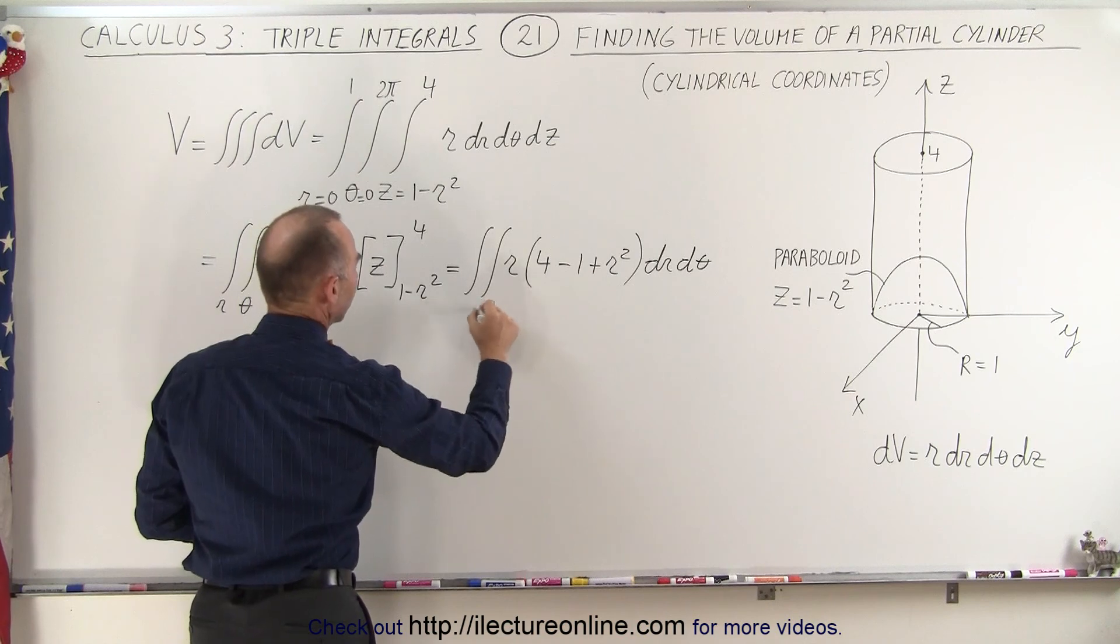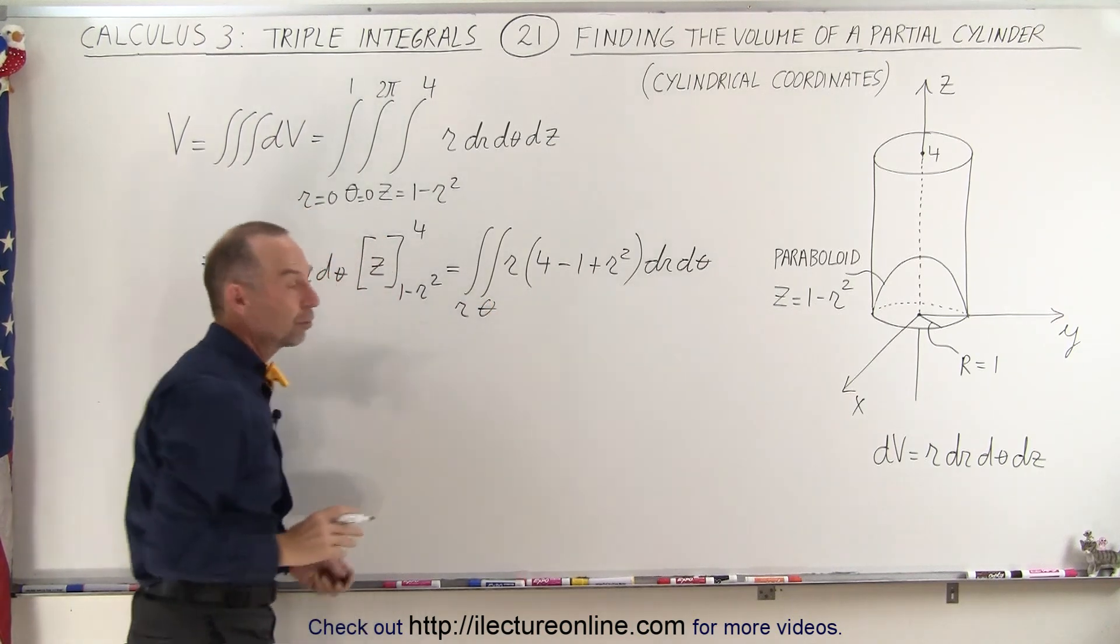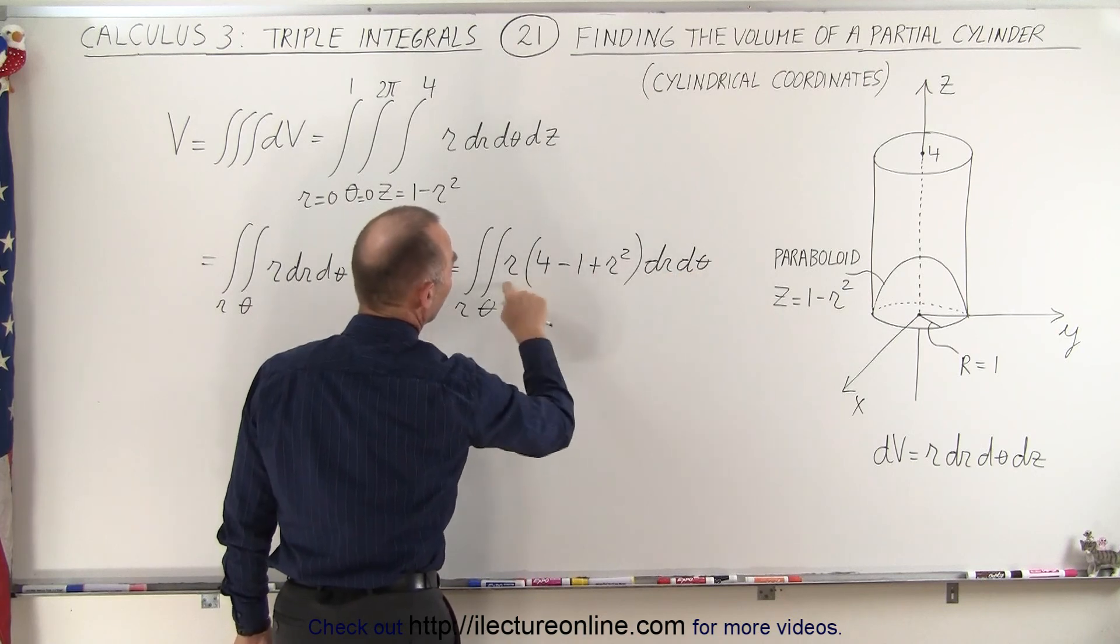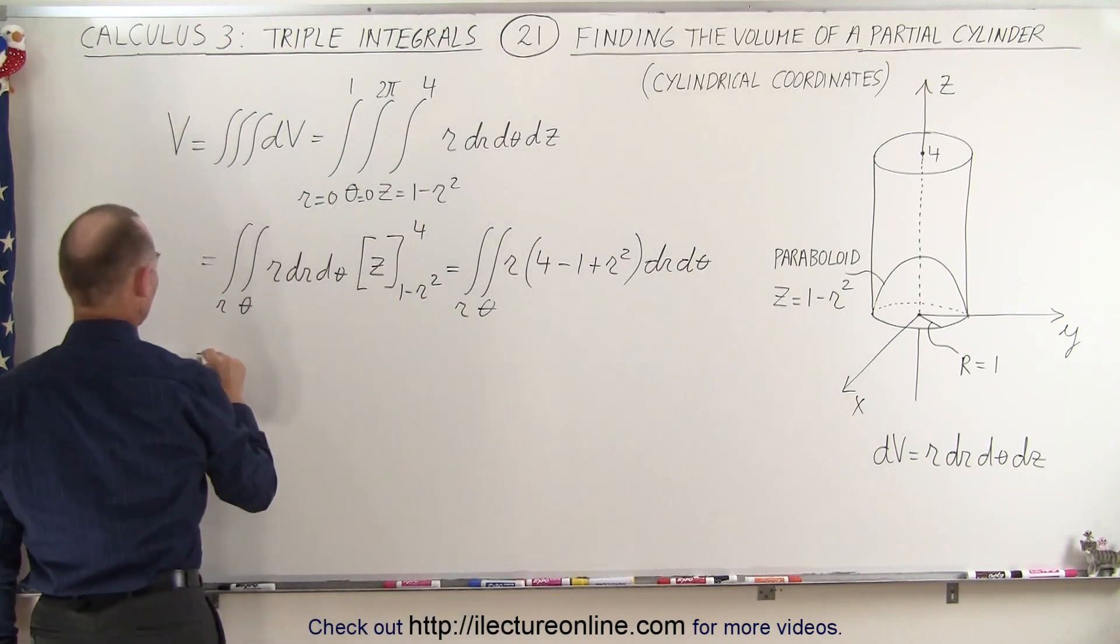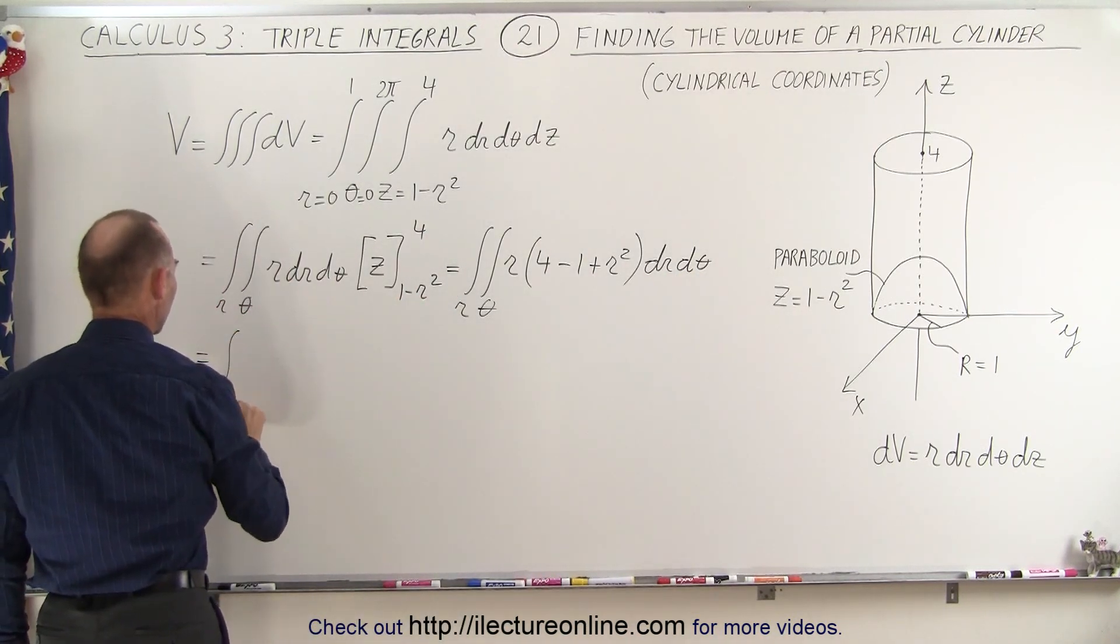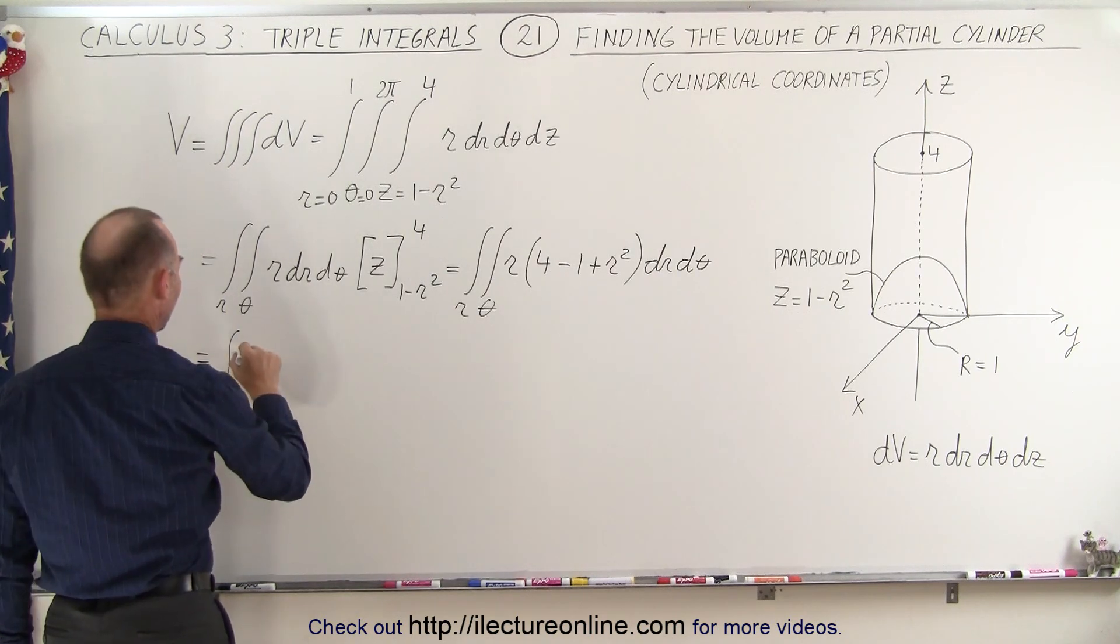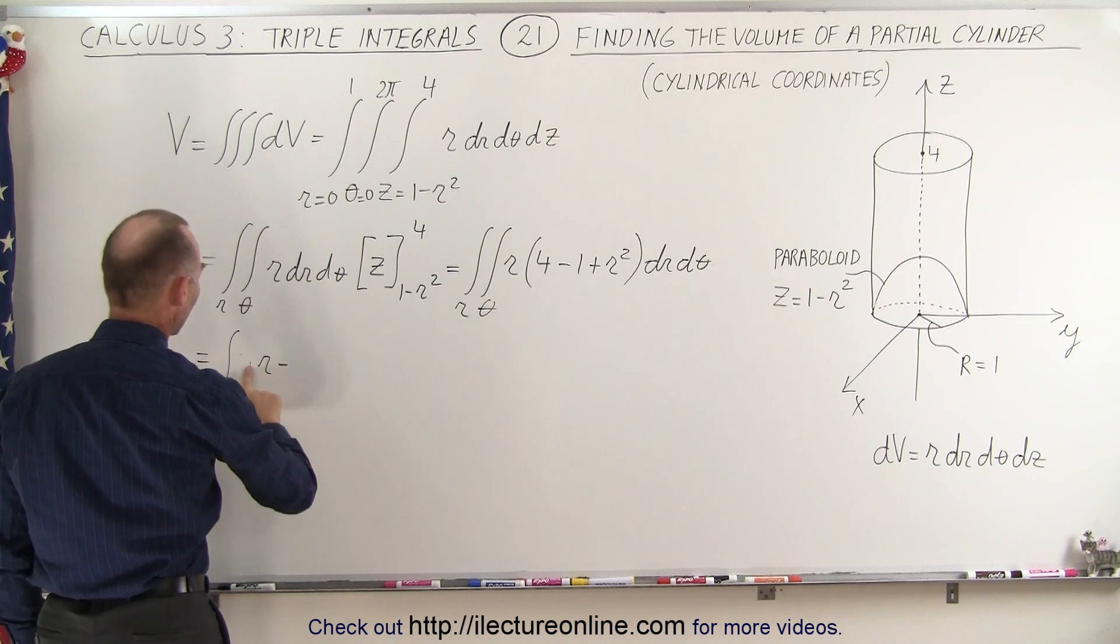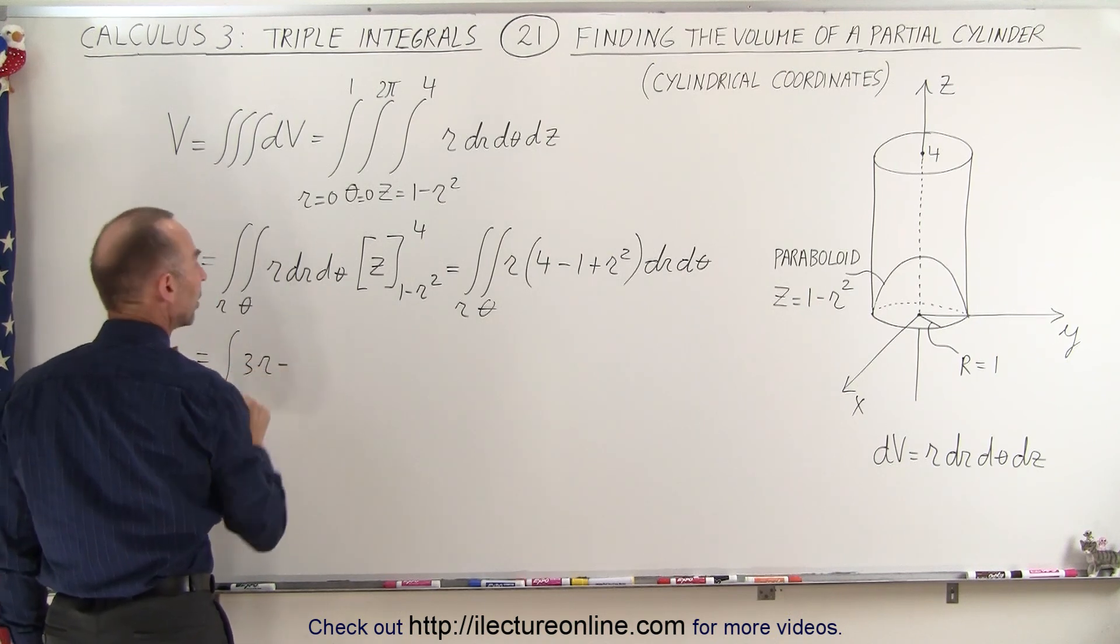And we're going to integrate over θ and integrate over r. So the next thing we're going to integrate is, we're going to integrate over dθ. We can simplify this. So this becomes equal to the single integral over r remaining. We have 4r minus, oh, let me take that back. That's 4 minus 1, which becomes 3r.